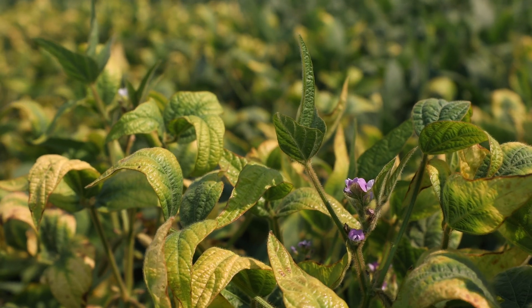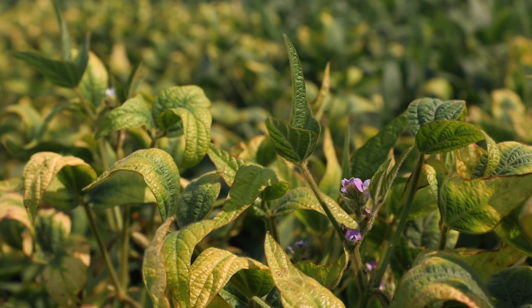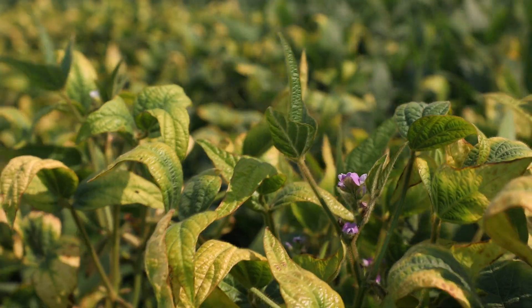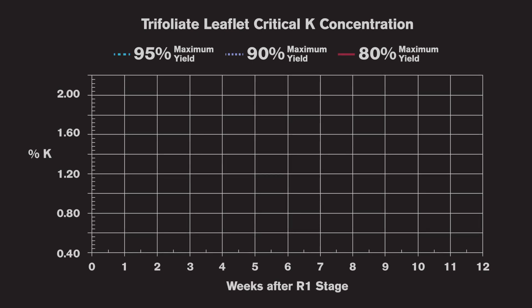What this means is that as the growth stage and the tissue concentration changes, our interpretation will also change. Many current interpretations are based on the R2 growth stage. Our data allows you to interpret tissue concentrations over a wide range of growth stages from vegetative all the way through the end of the growing season. Previous research has shown that tissue K concentration decreases as the crop continues to grow, which indicates that soybean yield can be maintained even as tissue K concentration decreases throughout the growing season.